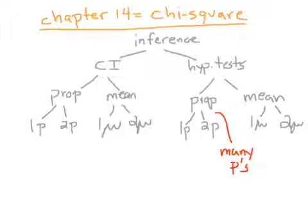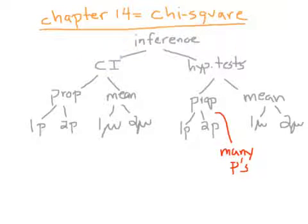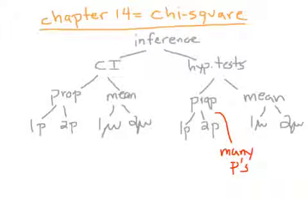Welcome back everybody. This is a video for chapter 14, which is all about something called a chi-squared distribution. Just to give you a little bit of a sense of where this fits into what we've been talking about the last few chapters — this is that big chart I drew in chapters 11, 12, 13. Everything in gray we've done before. Here's where chi-squared fits in.